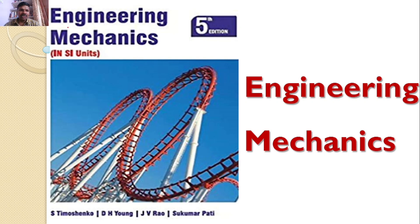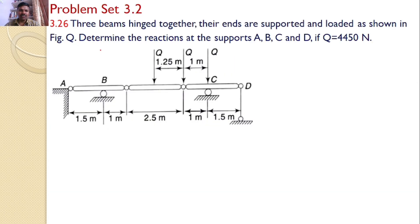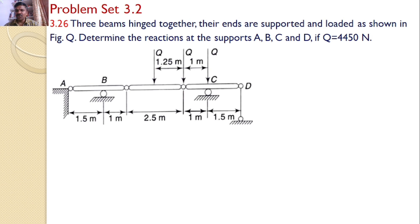Welcome to RK Tutorials, Solutions to Engineering Mechanics by S. Timoshenko, 5th edition. In this tutorial, we will discuss problem set 3.2, problem number 3.26. Three beams hinged together, their ends are supported and loaded as shown in the figure. Determine the reactions at the supports A, B, C, and D if Q is equal to 4,450 newtons.